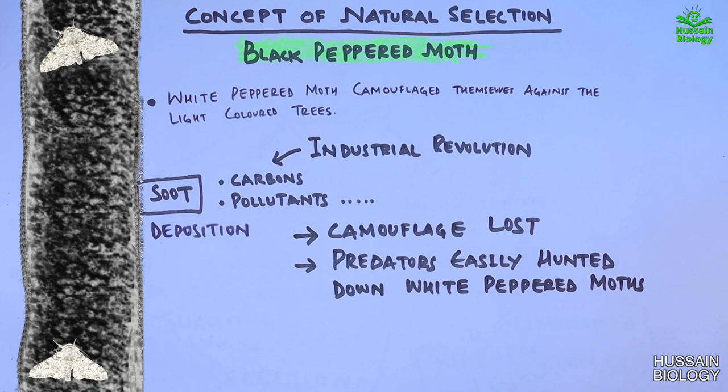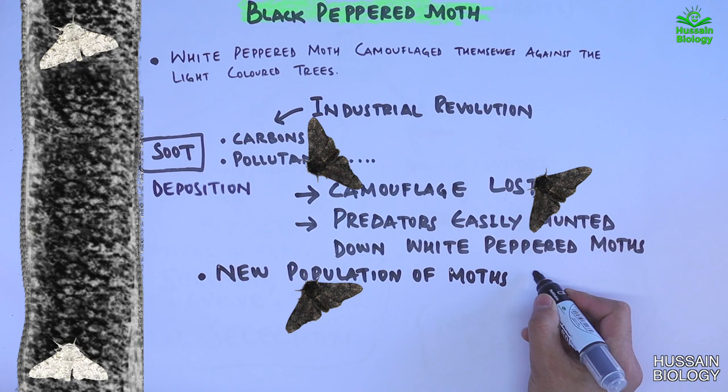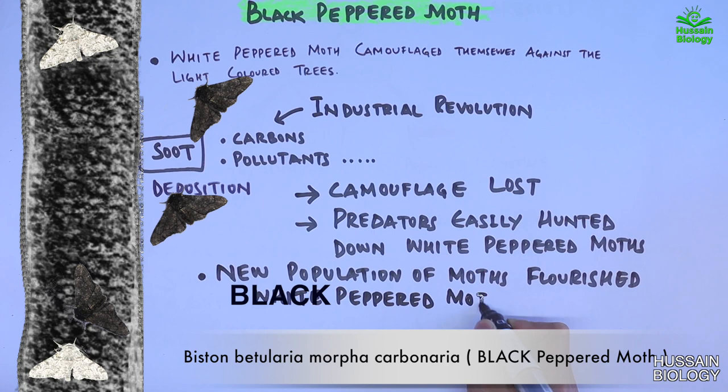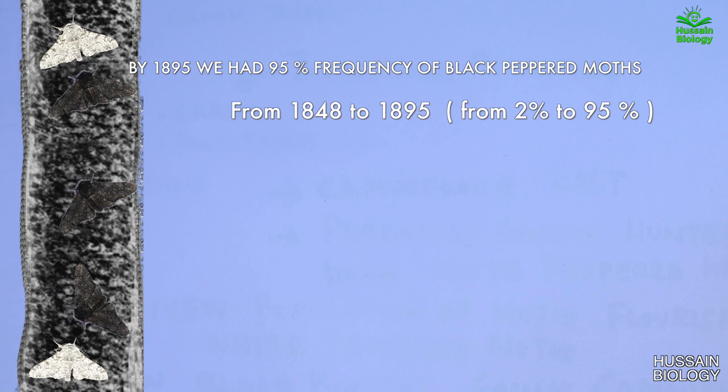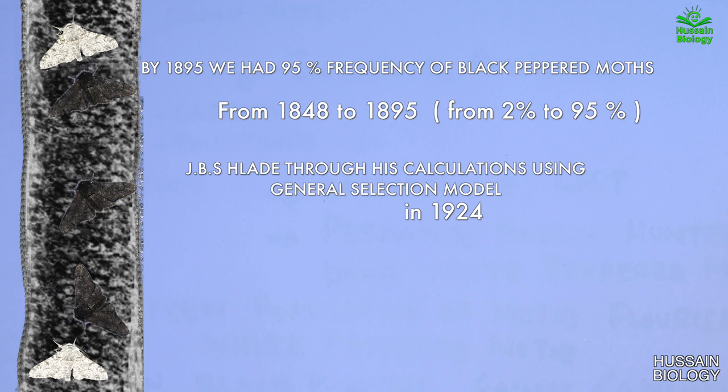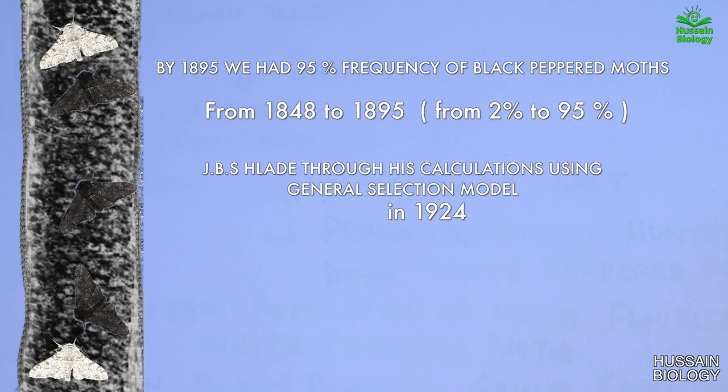But here comes the twist: around 1848, a new population of moths started to flourish in the environment — what we call black peppered moths. These moths were now taking advantage of the dark-colored tree trunks, where they camouflaged themselves to avoid predators. By the end of 1895, the frequency of black peppered moths reached almost 95%. This frequency data calculation was done by JBS Haldane using a general selection model to determine the frequency of black peppered moths during the industrial revolution.